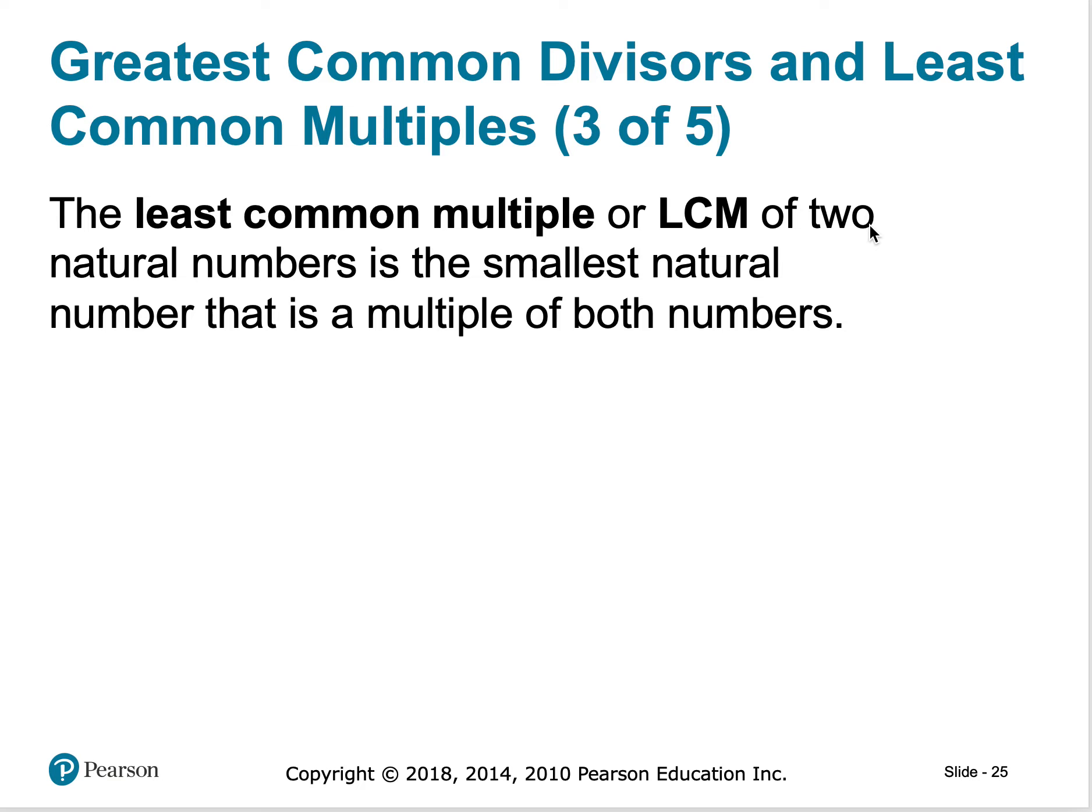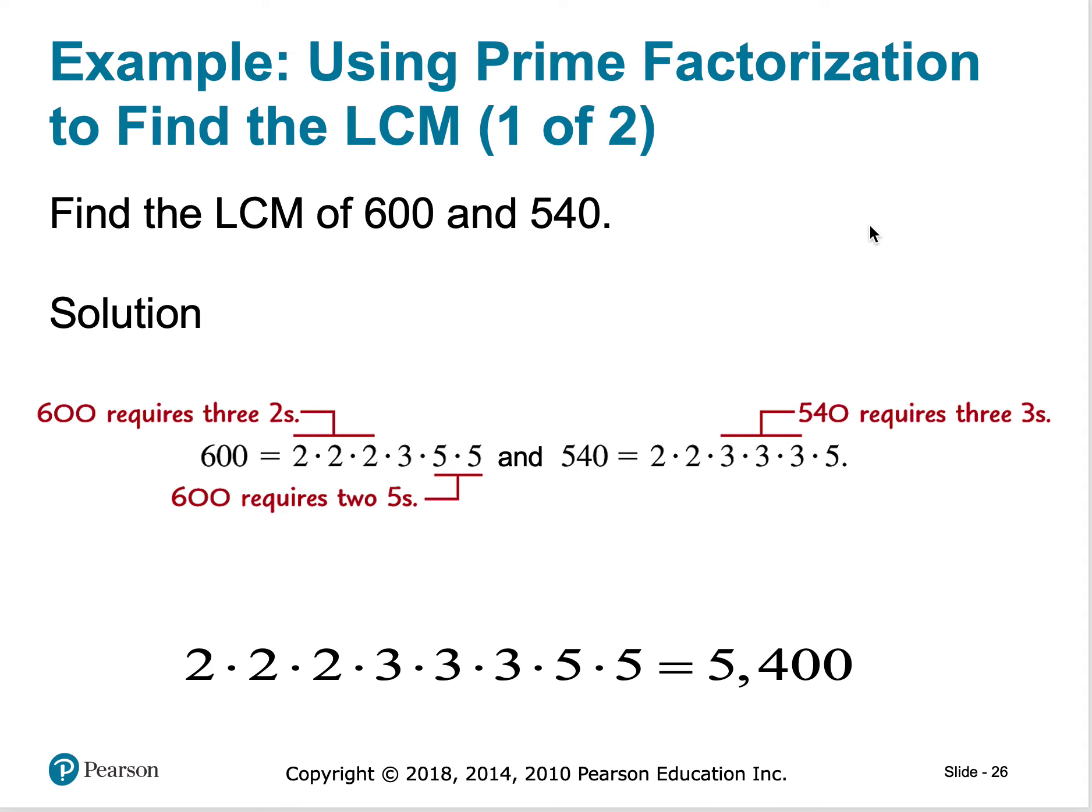If I'm looking for the least common multiple, that is the smallest number that is a multiple of both numbers. If I look at this and the smallest numbers that it has in common, 600 requires three twos and two fives. 540 requires three threes. If I take all of the factors and put them together in their largest quantity, I have 2 times 2 times 2, that's the most twos multiplied. I have 3 times 3 times 3, that's the most threes multiplied between both numbers. And 5 and 5. So my least common multiple is actually going to be 5,400. It would have taken you a long time to keep doubling those numbers to find where that multiple was at.